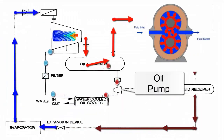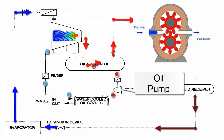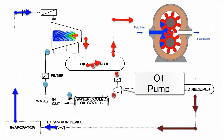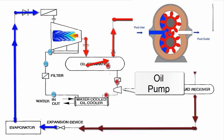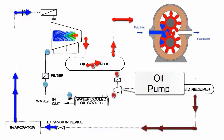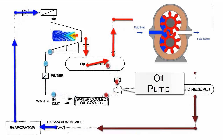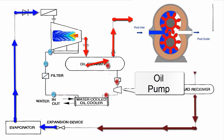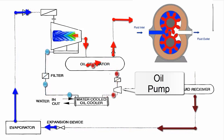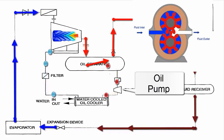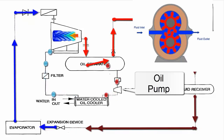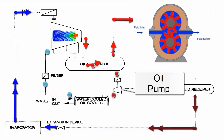Oil Pump. The hot oil exits the separator, passes through a filter, and reaches the oil pump. The oil is pumped to a heat exchanger, where the heat is rejected, allowing the oil to regain its low temperature.